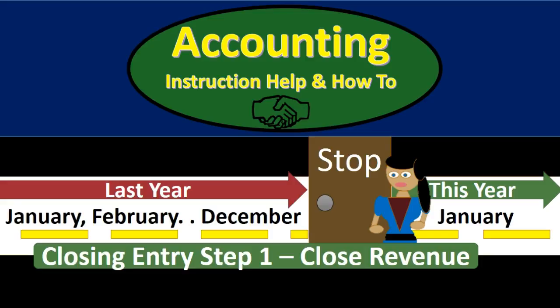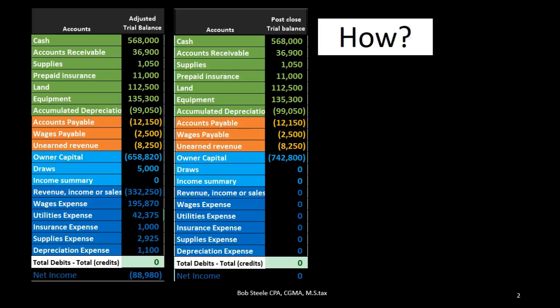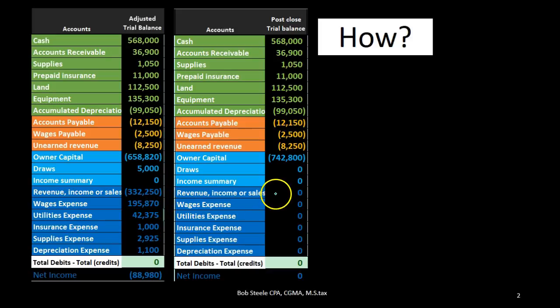In this lecture we're going to talk about the closing process, step one of the four-step process. Last time we talked about the objectives of the closing process, which in essence was to close out the temporary accounts — all the accounts from draws, revenue, and expenses — down to zero, putting that balance into the capital account.